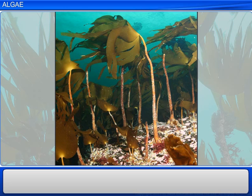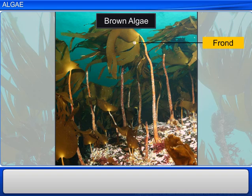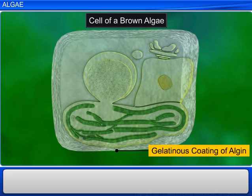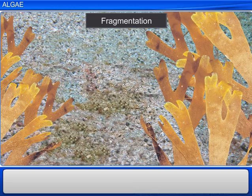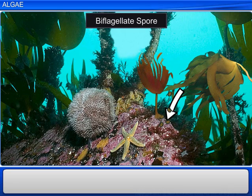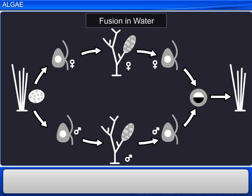The plant body of brown algae consists of a frond, a leaf-like photosynthetic organ, and a stipe that functions as a stalk. The frond and stipe are attached to the substratum by a holdfast. The vegetative cells have a cellulosic wall, which usually has an outer gelatinous coating of algin. The protoplast inside the cell has plastids and a centrally located vacuole and nucleus. Brown algae reproduce through fragmentation and asexually through biflagellate spores. In sexual reproduction, the gametes unite either in water or within the oogonium.